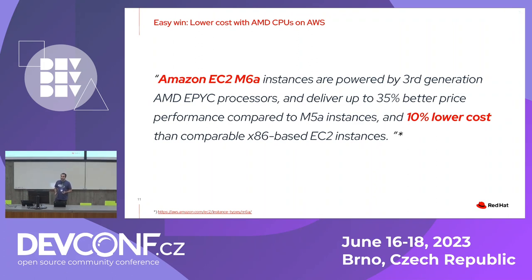The next easy win is associated with AWS: you can change the type of CPU. We changed from Intel CPUs to AMD CPUs, which are cheaper on AWS. The performance is more or less the same, so nobody was hurt by doing this.